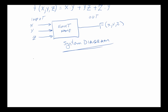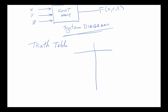The next step is the truth table. A truth table captures all possible inputs and all possible outputs associated with those inputs. We use a T-structure: on one side we put the inputs X, Y, and Z, and on the other side we put the output — our function F of X, Y, and Z.